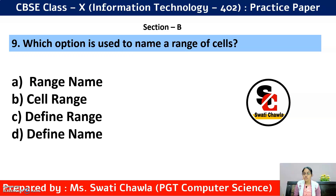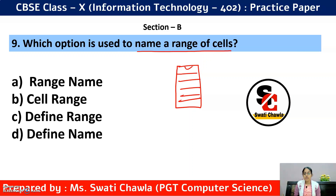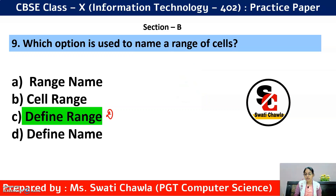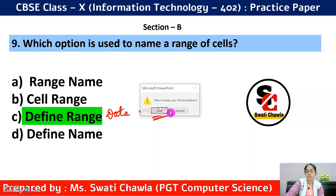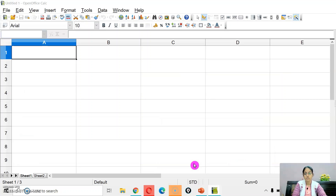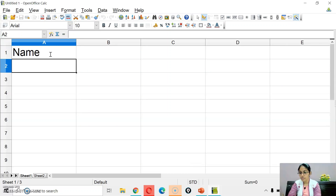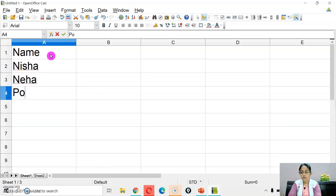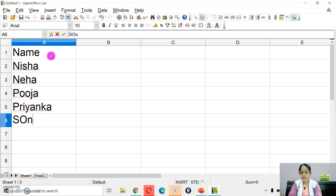Question 9: Which option is used to name a range of cells? Naming a range is done with the Define Range option, which is under the Data menu. For example, if we have names — Nisha, Neha, Kooja, Priyanka, Sonia — in column B2 to B6, we can select that range and type a name directly in the Name Box and press Enter. The range is now named.